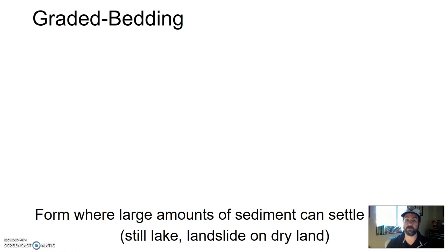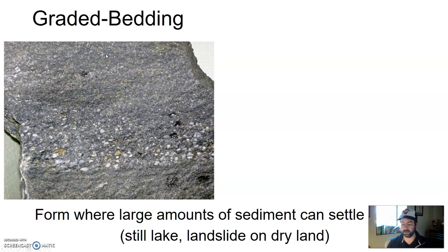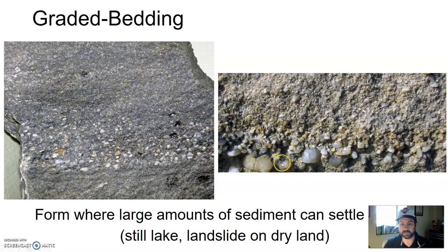Graded bedding forms where a large amount of sediment can settle very quickly — for example, a landslide into a still lake or a landslide on dry land. Graded bedding is when you go from one size of sediment to a different size and then back again: you see bigger pieces at the bottom, and on top the sediment gets smaller and smaller. If you take a big pile of material in all different sizes and create a landslide, the big stuff settles out first and the lighter, smaller sediment settles on top. Graded bedding therefore indicates rapid movement of sediment.